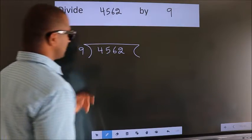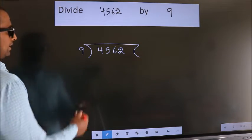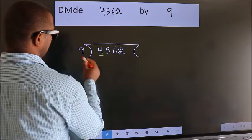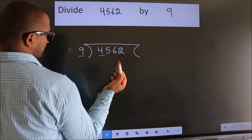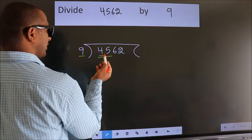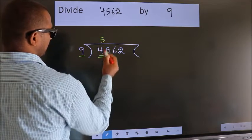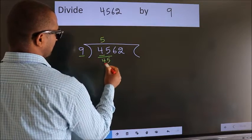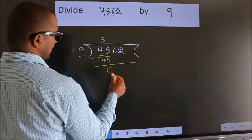This is step 1. We have 4, and 9. 4 is smaller than 9, so we should take two numbers: 45. When do we get 45 in the 9 table? 9 times 5 is 45. Now we subtract and get 0.